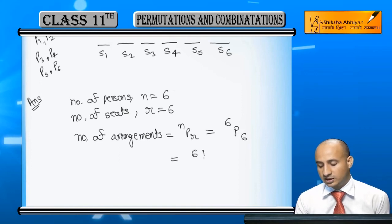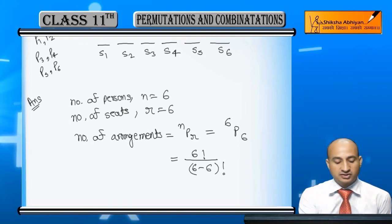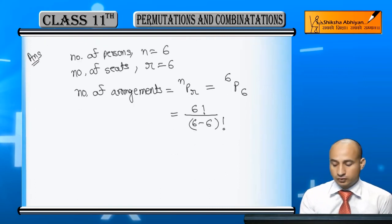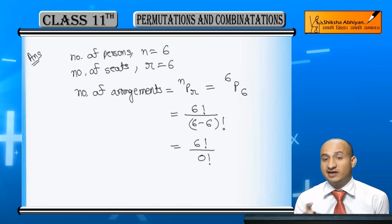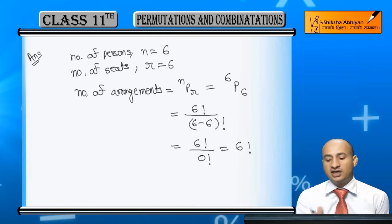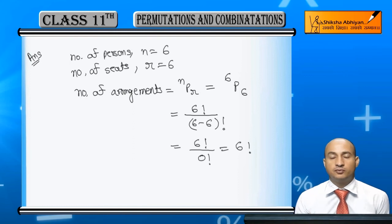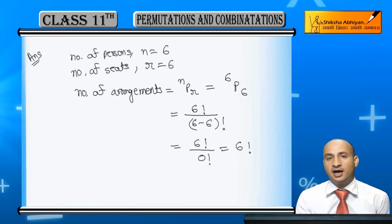6P6 equals N factorial over N minus R factorial, which is 6 factorial over 6 minus 6 factorial. Now, 6 minus 6 is 0 factorial, and the value of 0 factorial is 1. So the answer is 6 factorial. This is the permutation — the arrangement of R out of total N.